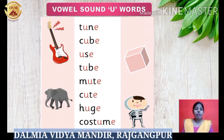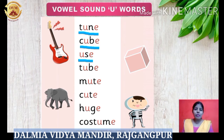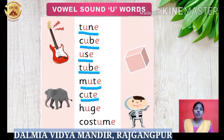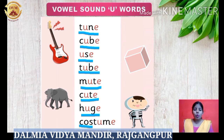Here we have some more U sound words, so let's read. T U N E – tune. C U B E – cube. U S E – use. T U B E – tube. M U T E – mute. C U T E – cute. H U G E – huge. An elephant is a huge animal. C O S T U M E – costume. Here a boy is wearing a skeleton costume.